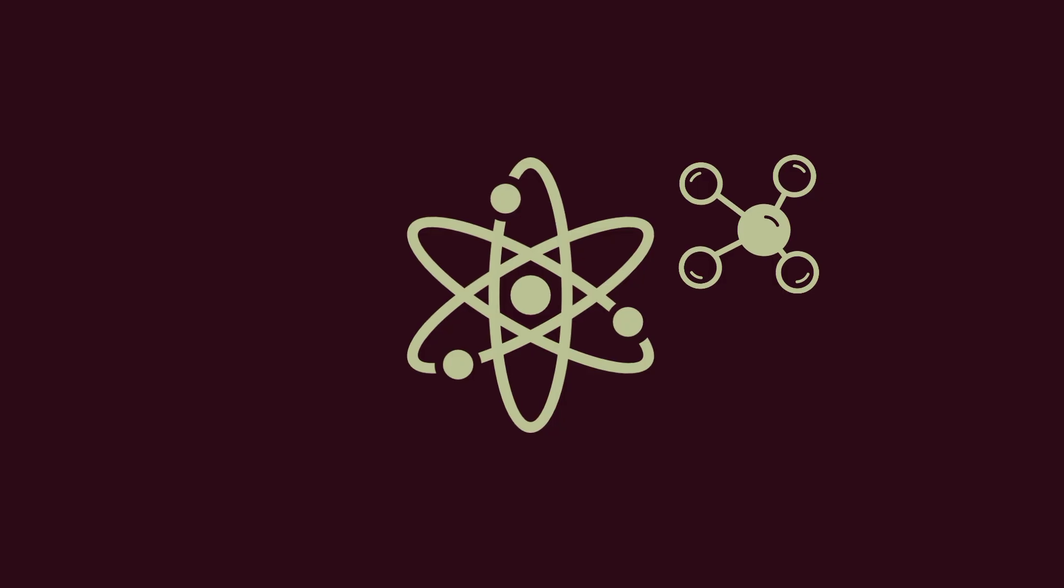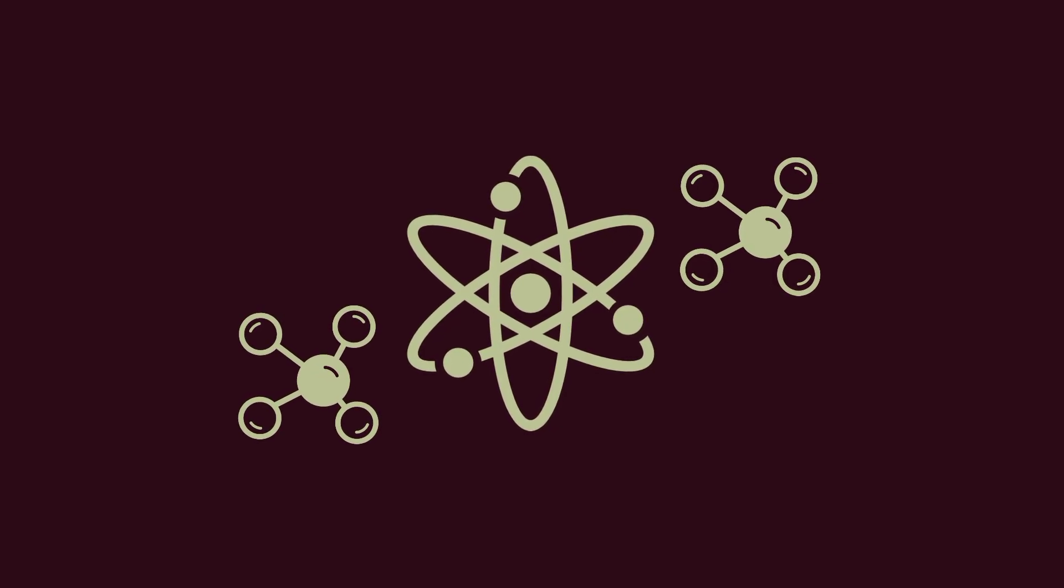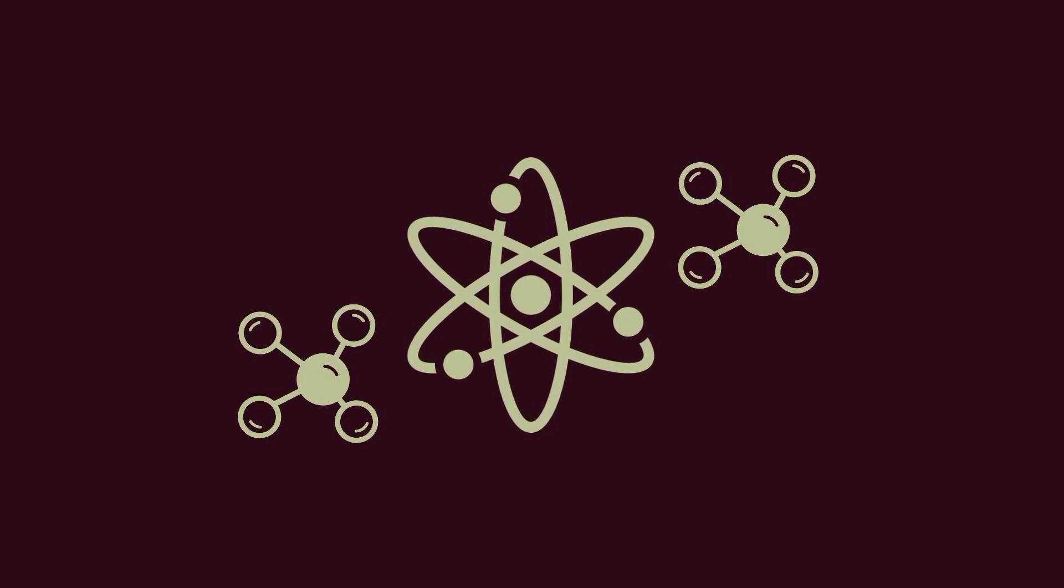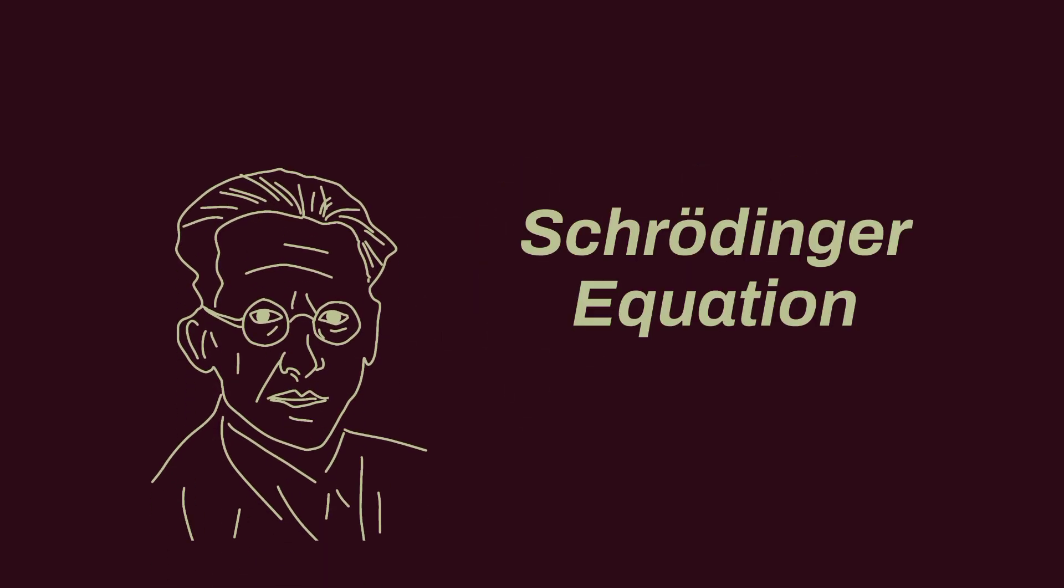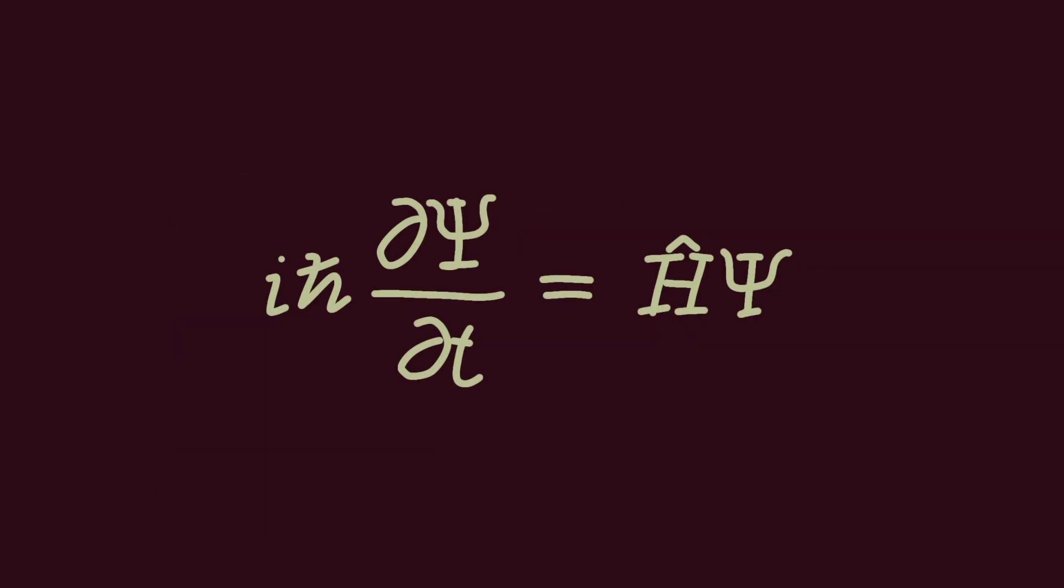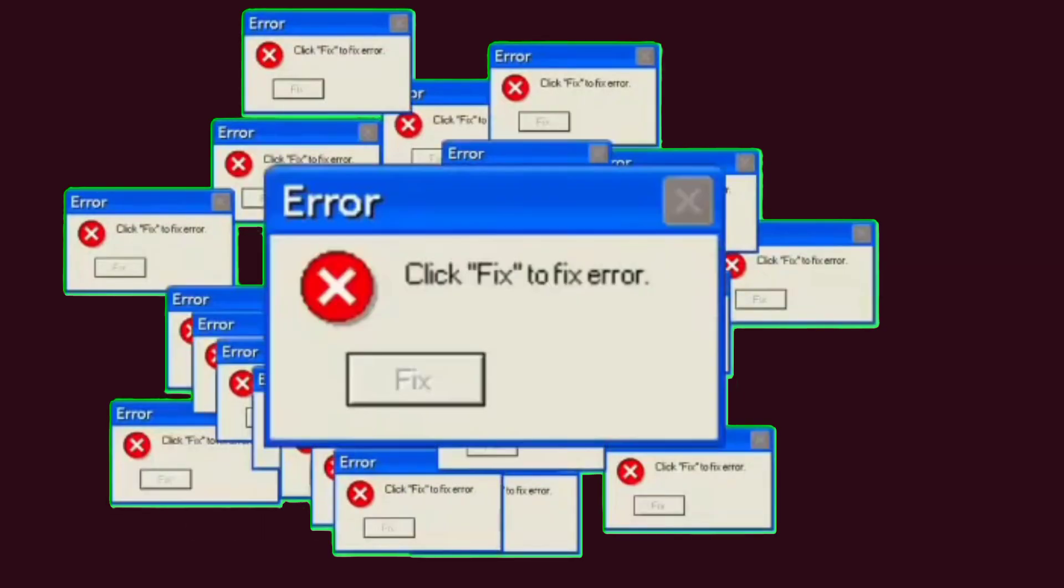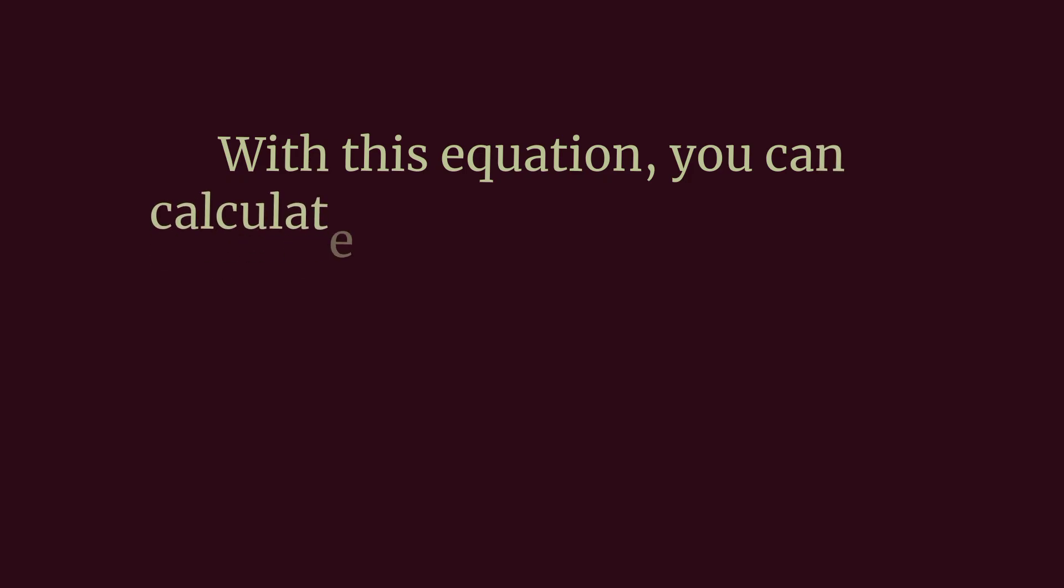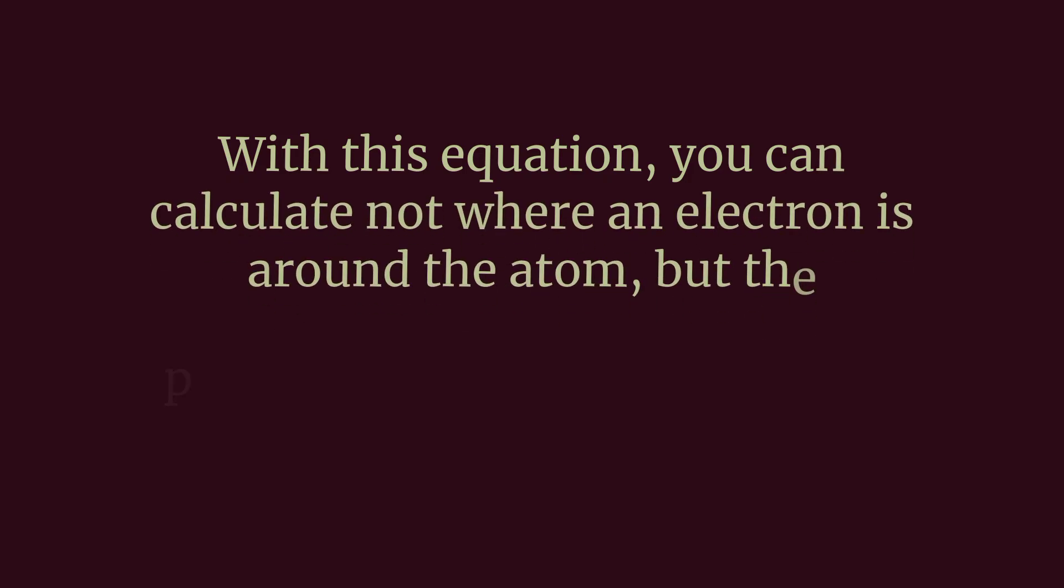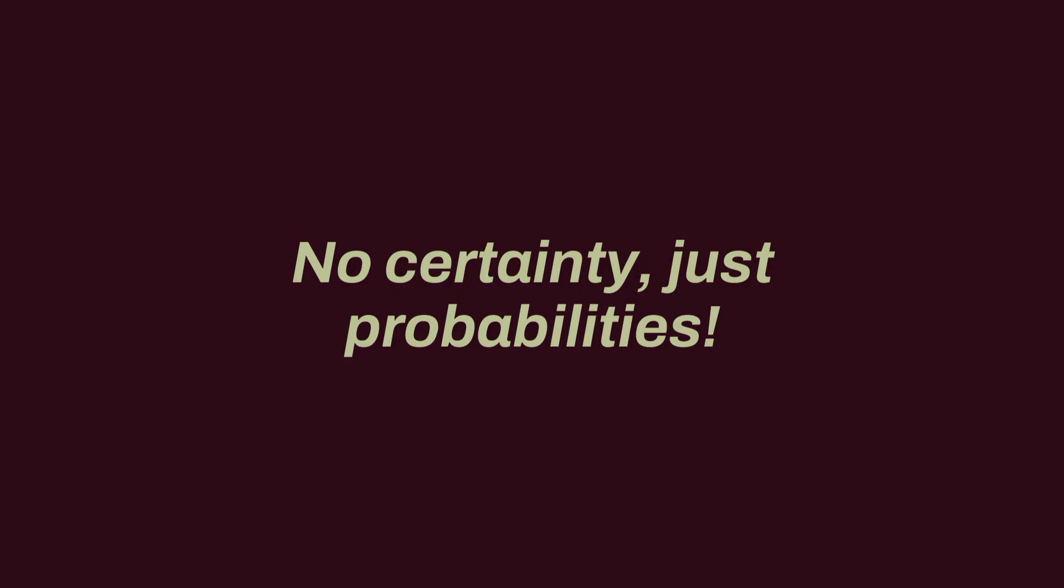At the time, there was a strange theory that said we couldn't know for sure where particles like electrons were. They were only a wave of probability. To challenge this, Schrödinger developed a famous formula called the Schrödinger equation, which describes how a particle changes over time. This equation describes all possible states of an atom or particle as a wave of probability. With this equation, you can calculate not where an electron is around the atom, but the probability of where it might be. No certainty, just probabilities.